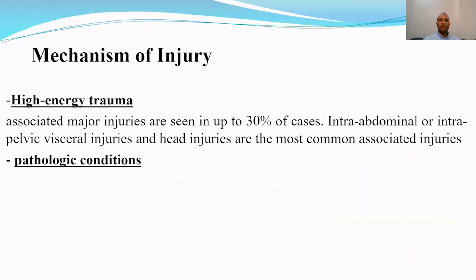The mechanism of injury is usually associated with high-energy trauma, accounting for about 30% of cases. We should search for other associated injuries like intra-abdominal, intrapelvic, visceral, or head injuries. If the mechanism involves minor trauma or there are repeated fractures, we should search for pathological conditions or pathological fractures.